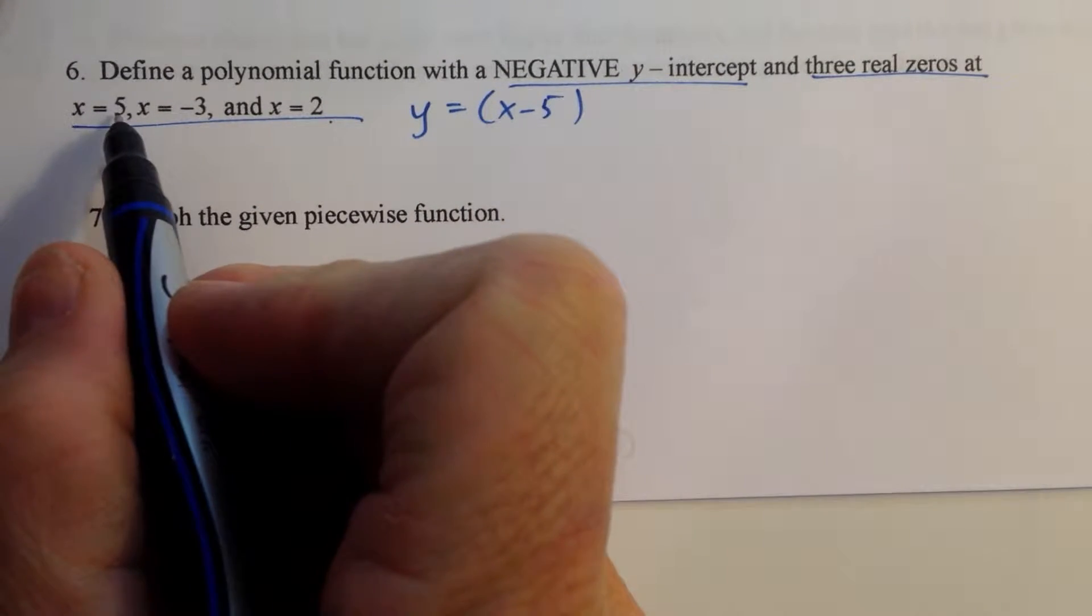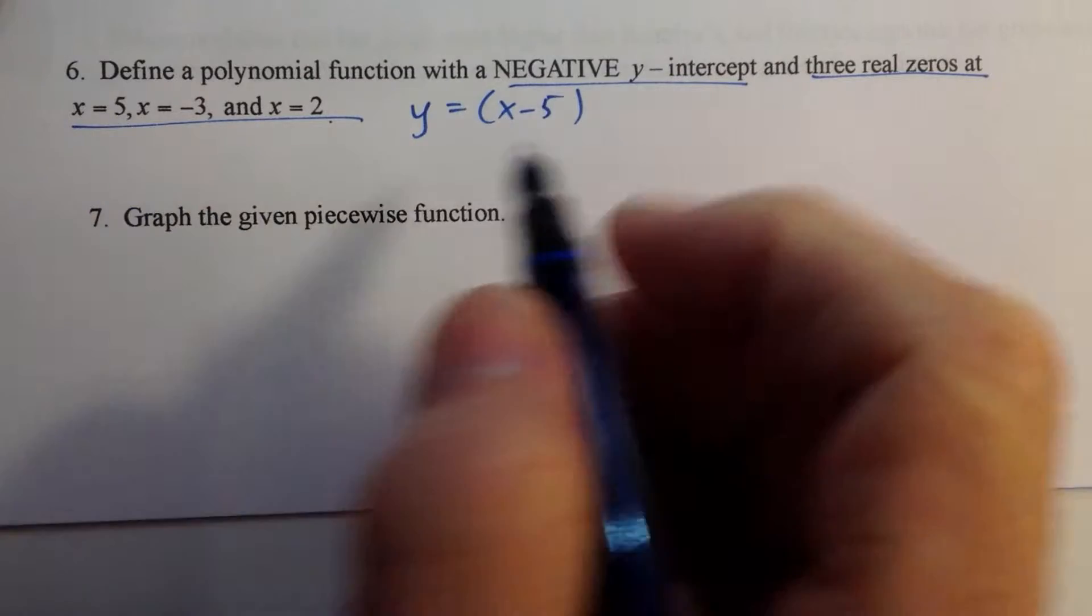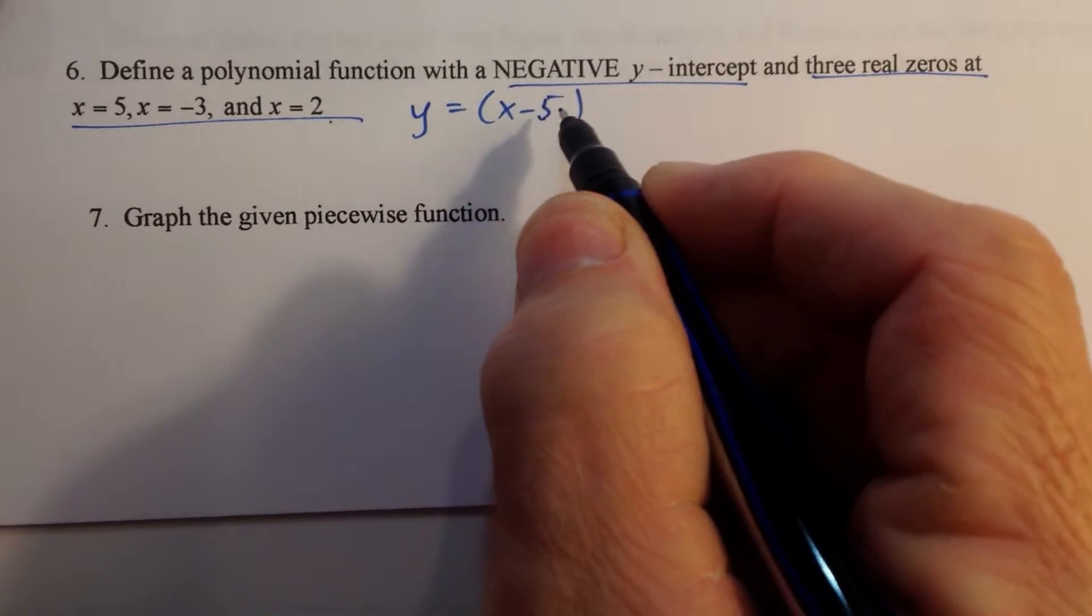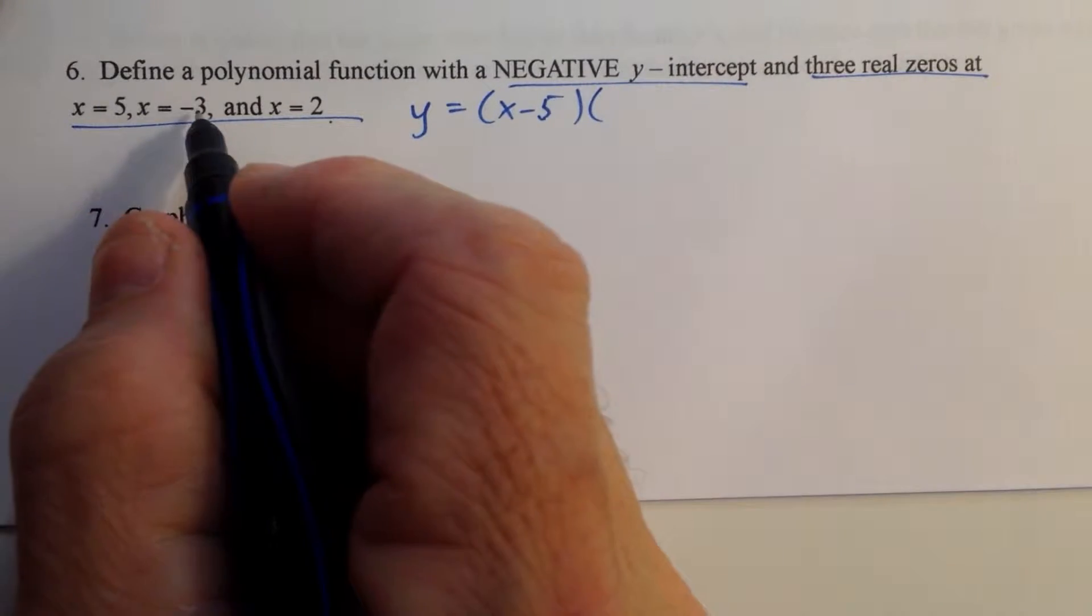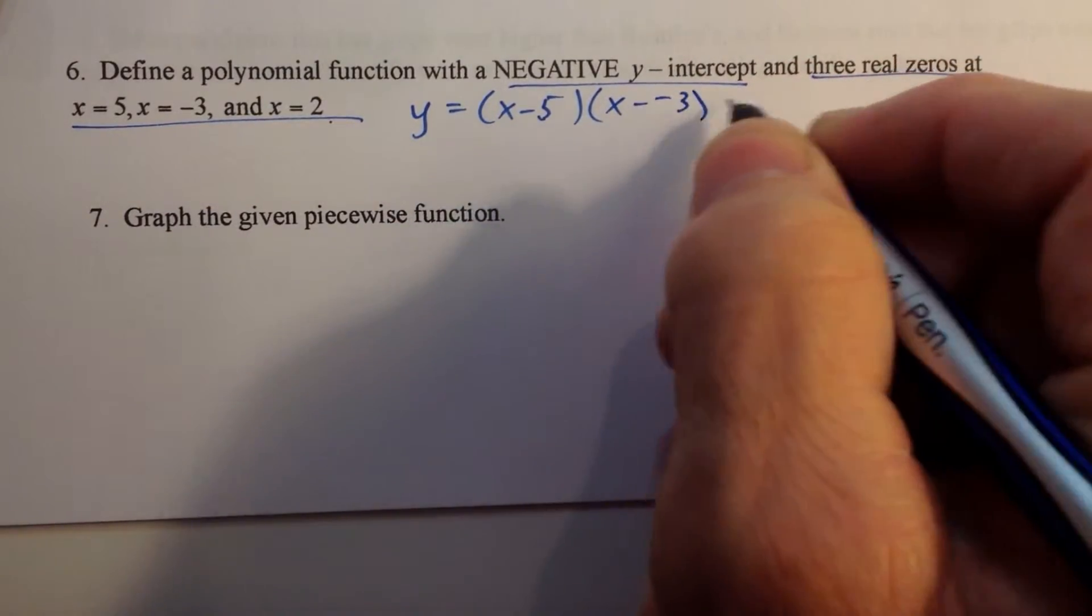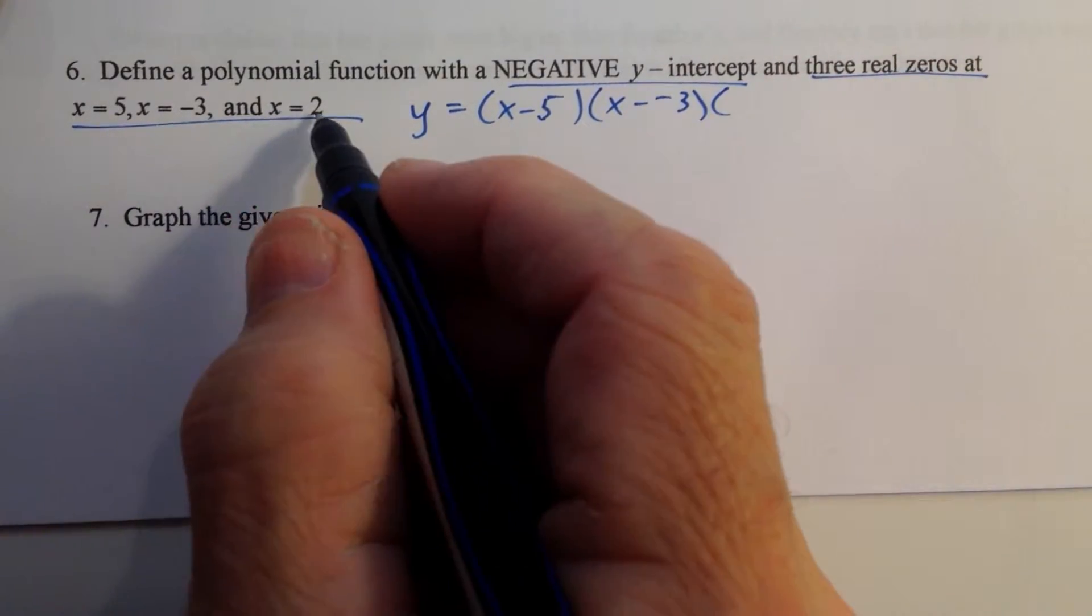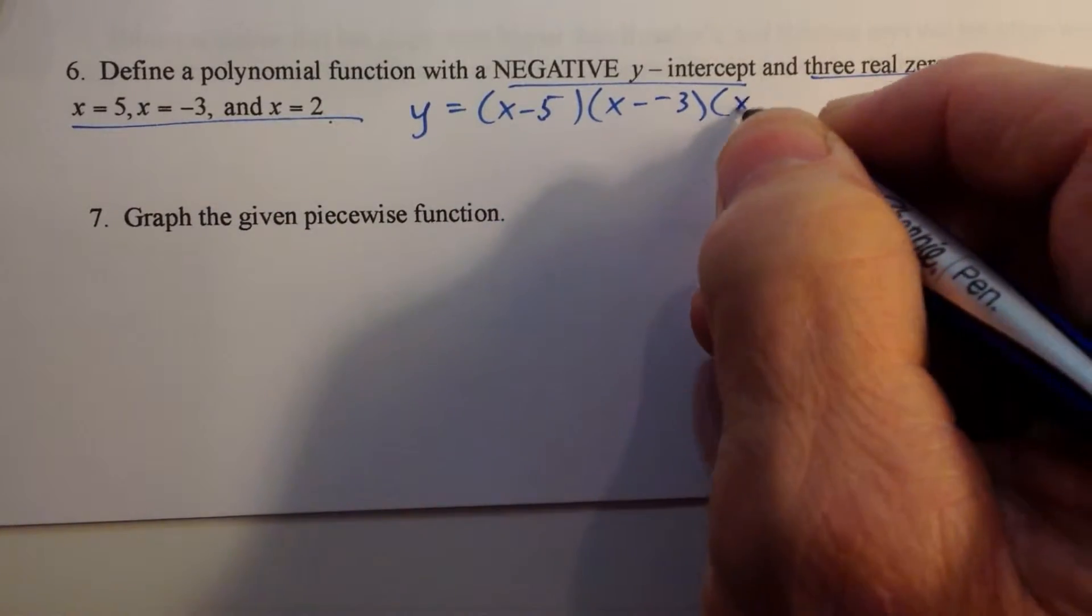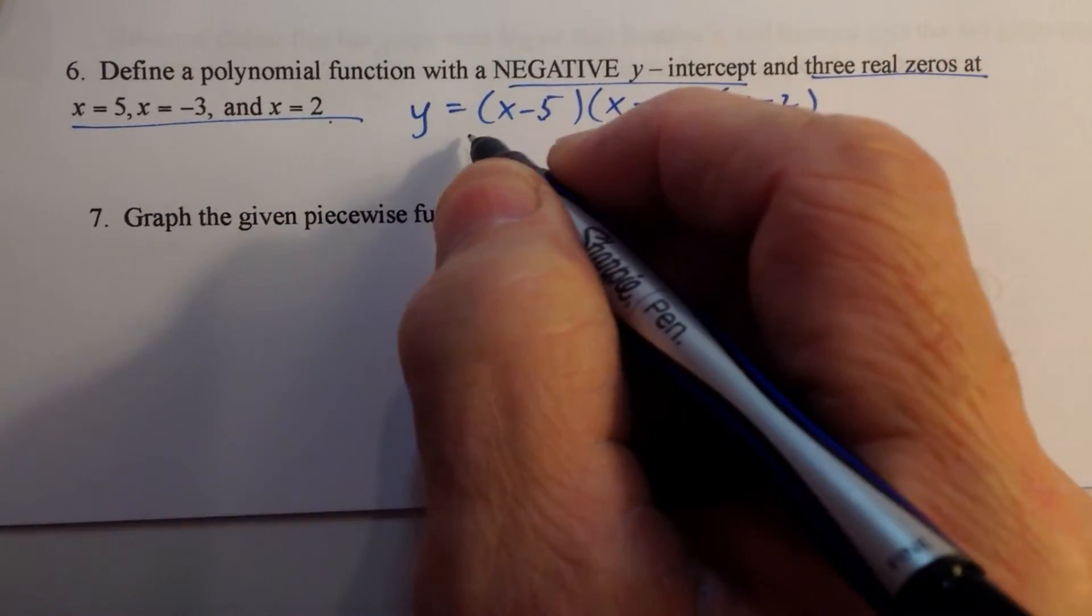If x equals 5 is a zero, it means that x minus 5 is a factor. If x equals negative 3 is a zero, then x minus negative 3 is a factor. If x equals 2 is a zero, so x minus 2 is a factor.